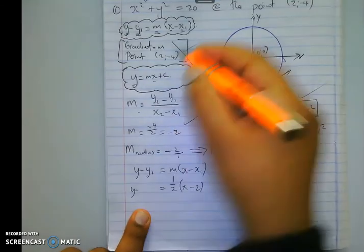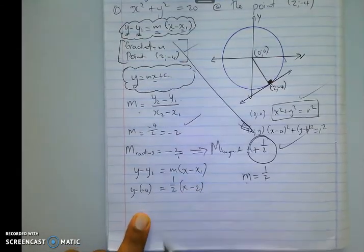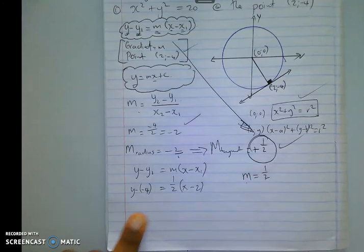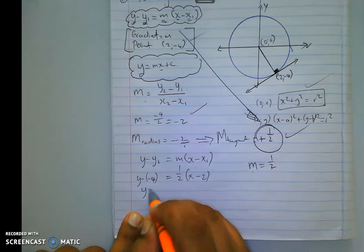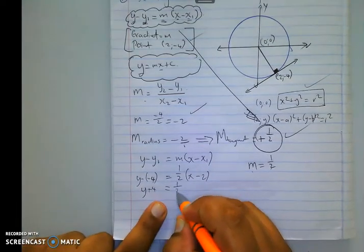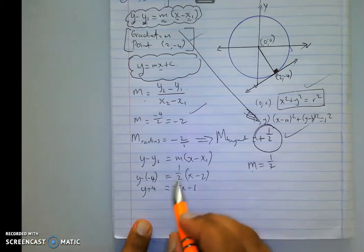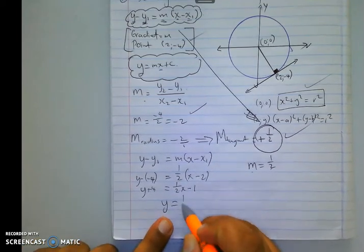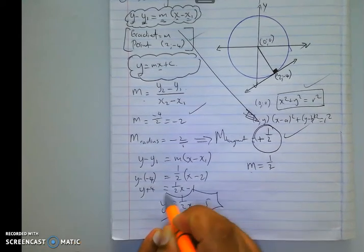y minus y₁ is -4. Also, you must open your bracket learners, please. Don't do that because it will cause a problem for your solution. Then I have y plus 4 equals 1/2 times x minus 1. And if I simplify learners, y is then equal to 1/2 x minus 5. And that is your answer. Thank you.